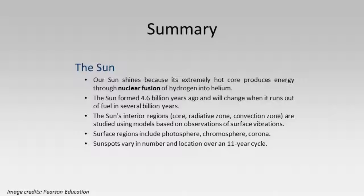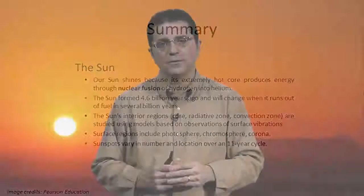We looked at the surface regions of the Sun: the photosphere, the chromosphere, and the corona. We finished by looking at the 11-year cycle of sunspots increasing and decreasing in number, and also in latitude — beginning at higher mid-latitudes and gradually working their way down towards the equator. Our Sun is a fascinating star, and we'll use its properties as a baseline comparison for future stars in our other lectures.